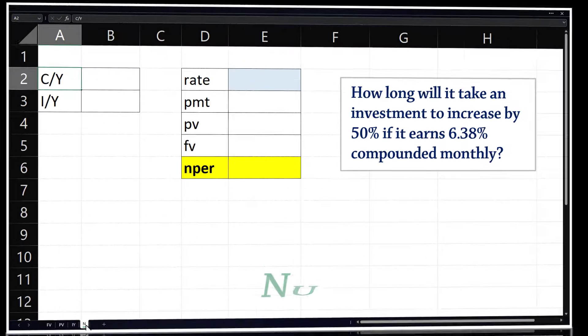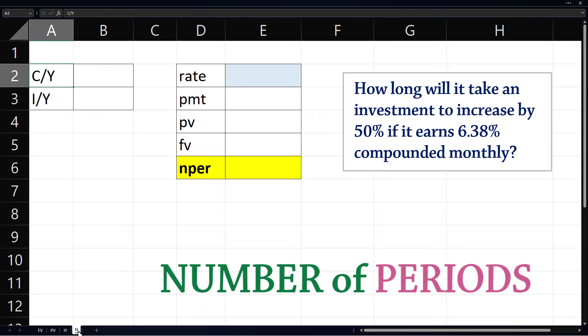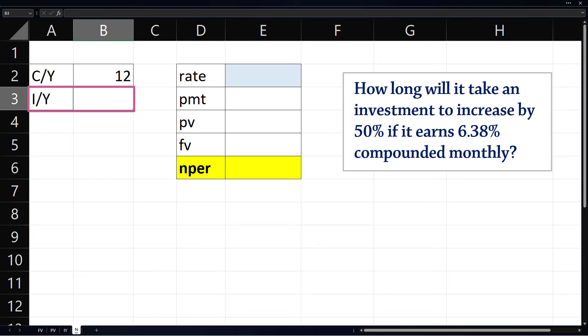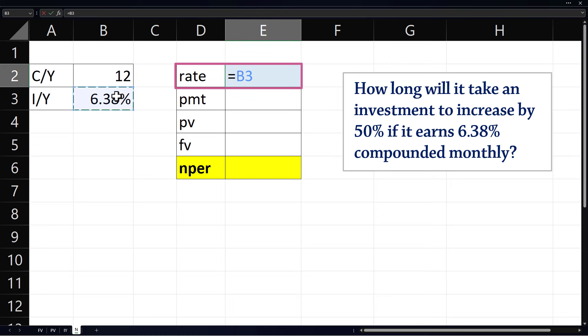Finally, we compute the number of periods. In this question, we want to find how long it will take an investment to increase by 50% if it earns 6.38% compounded monthly. Since we're compounding monthly, CY will be 12. Interest is 6.38%. Periodic rate here will be nominal rate divided by compounding frequency. Periodic payment will be 0.